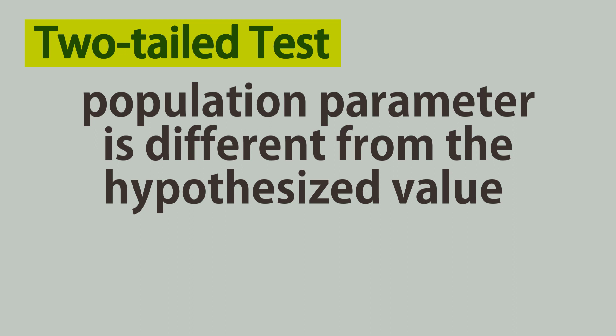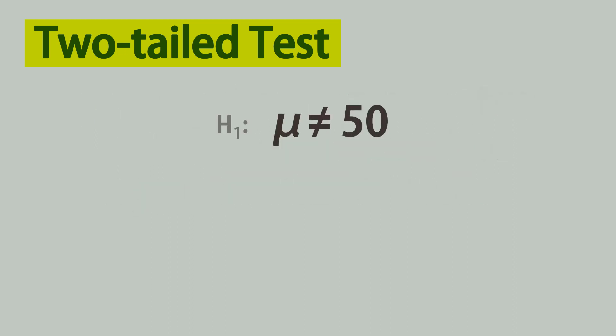For example, testing if the mean of a population is not equal to 50. Not equal to 50 could mean greater than 50 or less than 50. Hence, it's two-tailed.